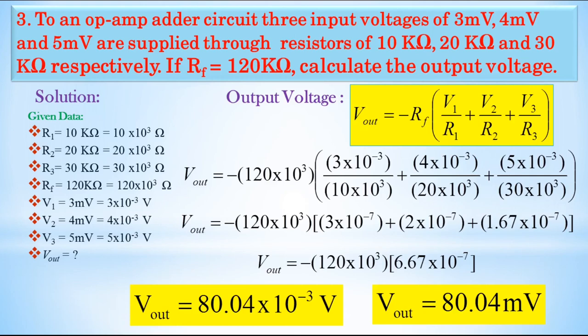In this lecture, we have calculated output voltages in the case of an inverting amplifier, non-inverting amplifier, as well as an op-amp adder or summing amplifier circuit. For the summing amplifier circuit, using non-inverting mode gives a positive output, while inverting mode gives a negative output. Thank you.